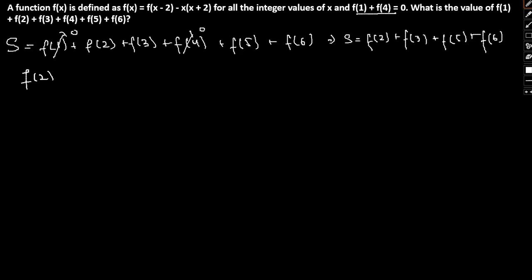Now f(2) can be written as f(0) because 2 - 2 is 0, minus 2 into 2 + 2 is 4, so f(0) - 8. f(3) can be written as f(1) - 15, just assuming the value of x in all the cases. f(4) can be written as f(2) - 4 into 6, that is 24. So here we have f(2), so I am going to substitute the value of f(2) in this case. So this comes out to be f(0) - 8 - 24. So this will be f(0) = f(0) - 32.